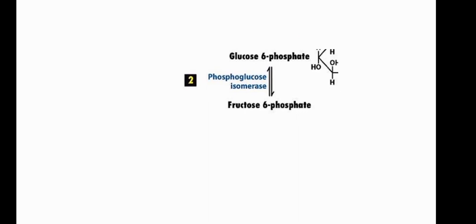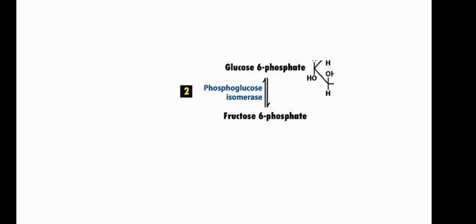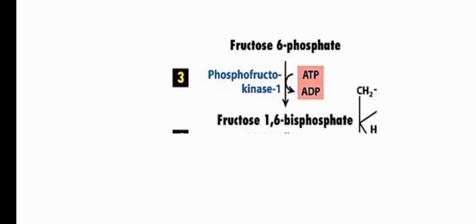Step 2: Glucose-6-phosphate is isomerized into fructose-6-phosphate by the enzyme phosphoglucose isomerase. The phosphate remains at the sixth position, but the glucose is converted to fructose. No energy is required and no energy is generated in this step.